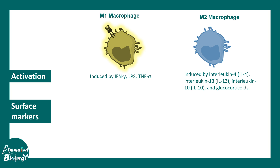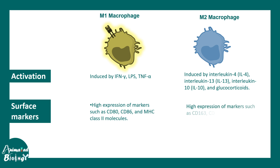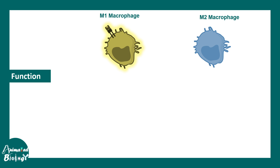When it comes to surface markers, M1 macrophages express high levels of CD80, CD86, and MHC class 2 molecules. In contrast, M2 macrophages express CD163 and CD206, which is the mannose receptor.